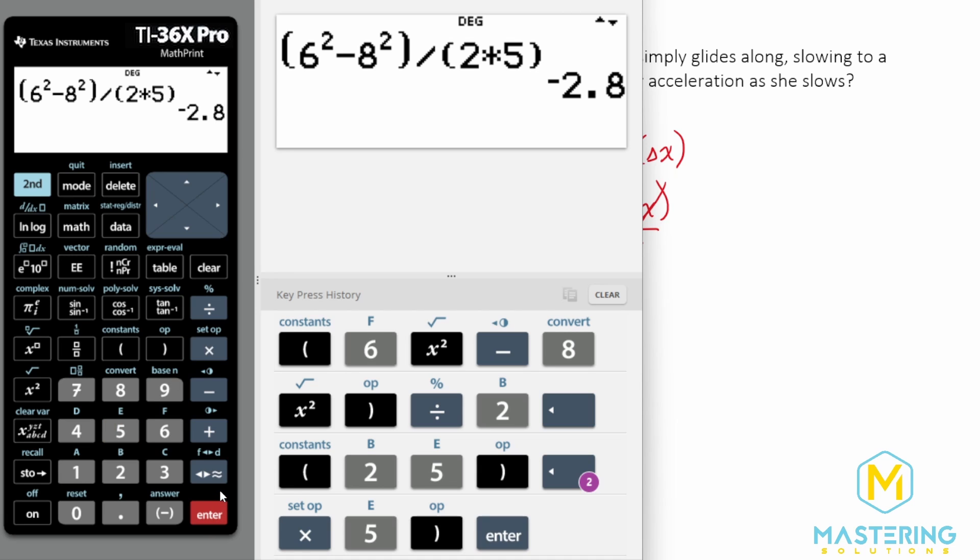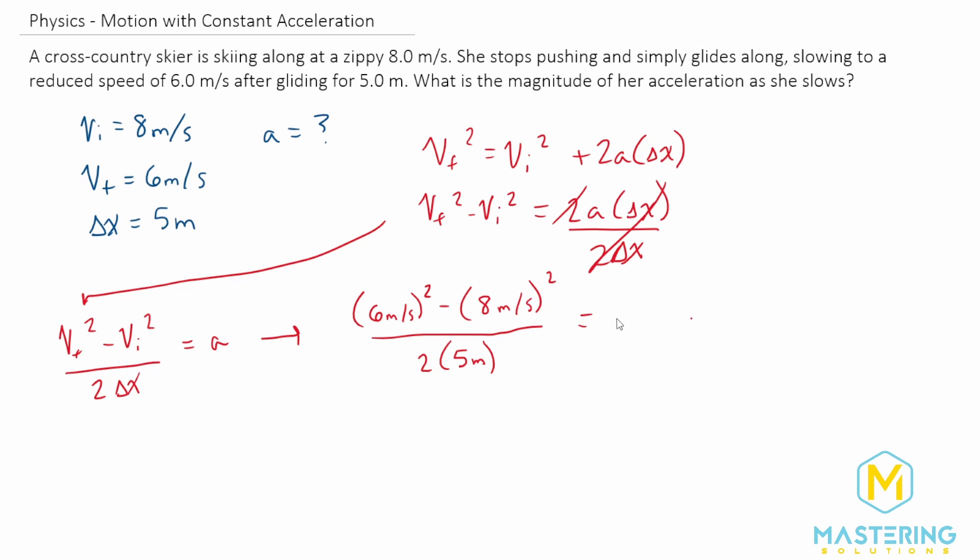So we have the final acceleration is negative 2.8. So just like we talked about, we know that the negative is not a surprise because she's slowing down. So the final answer is negative 2.8 meters per second squared for the acceleration as she slows in this situation.